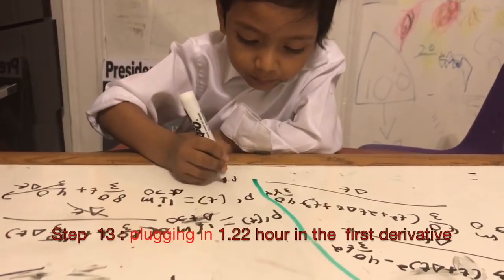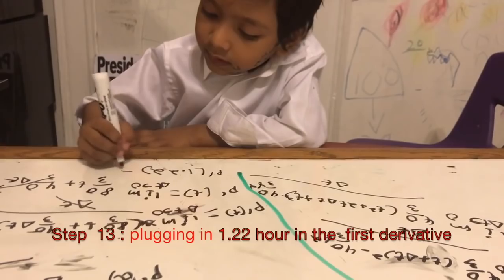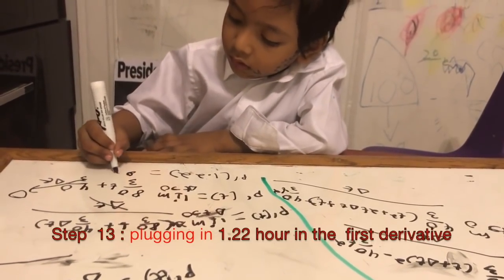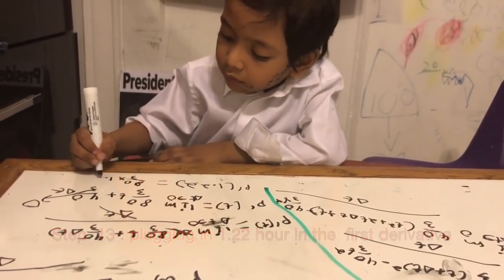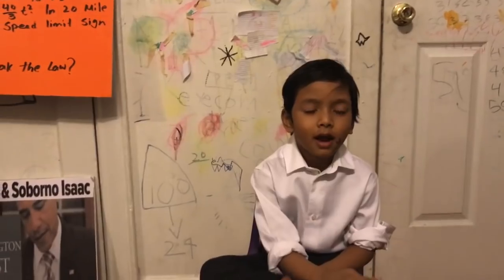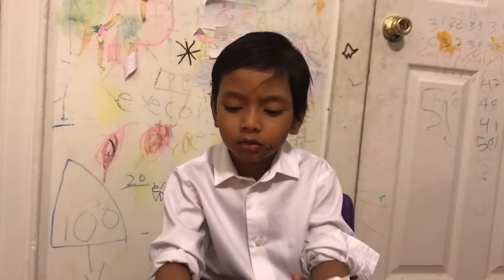So P prime of 1.22 is equal to 80 over 3 times 1.22, which is equal to 32. So Isaac actually broke the law because 32 mph is over 25 mph, which was the speed limit. Next time I'll do E equals mc squared.